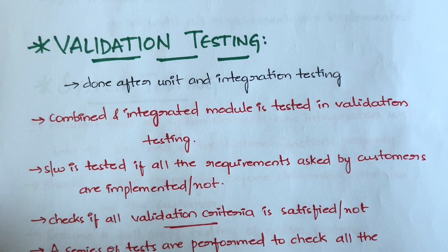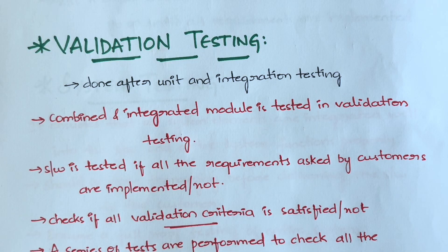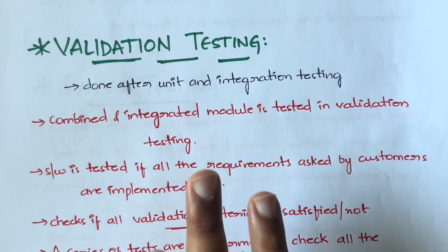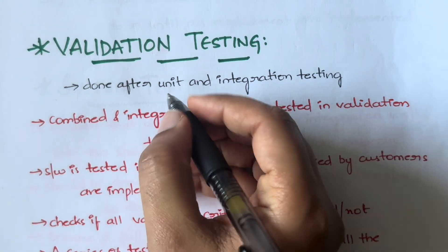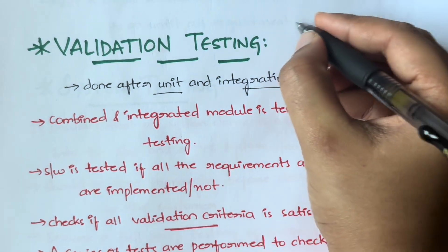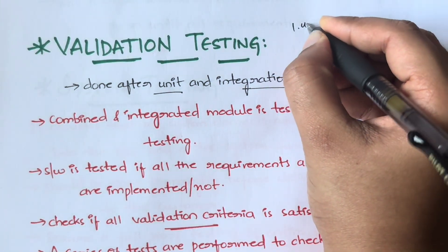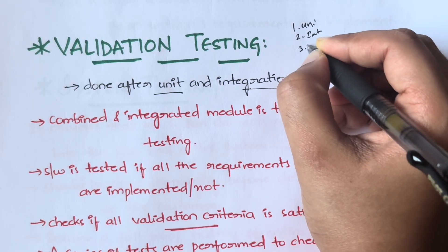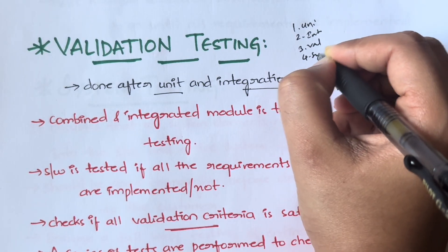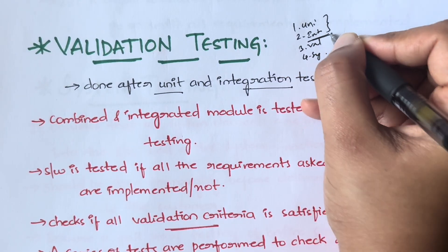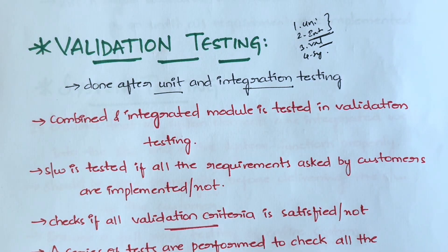Validation testing is usually done after unit testing and integration testing. So the sequence is: first unit testing, then integration testing, then validation testing, and then system testing. After unit testing and integration testing are done, you move to validation testing.